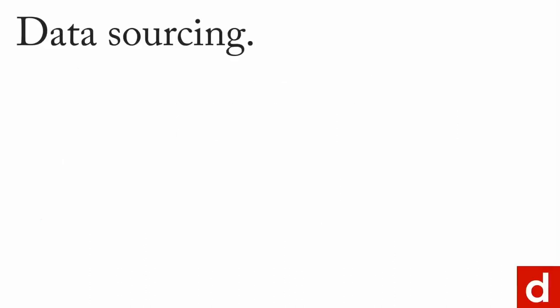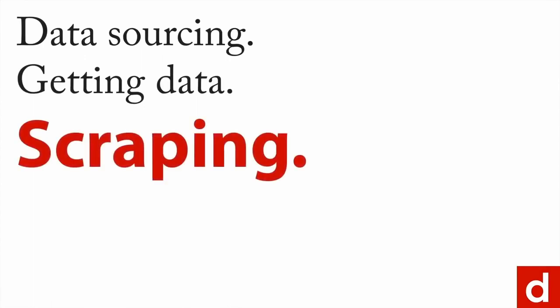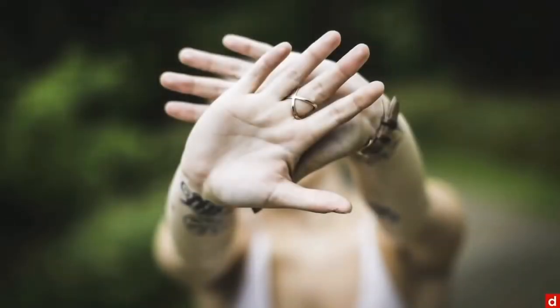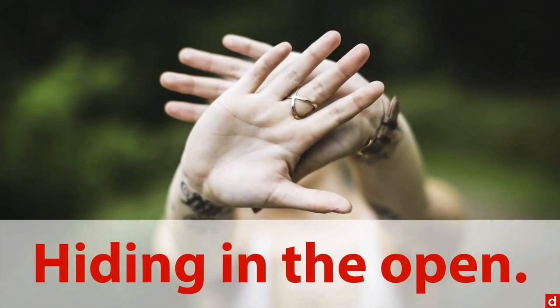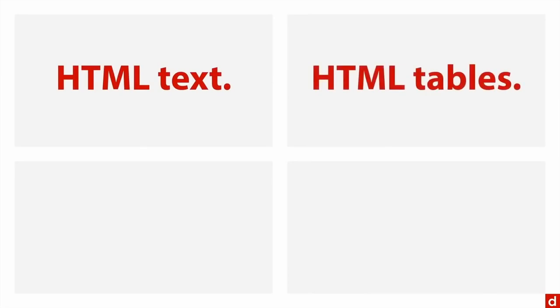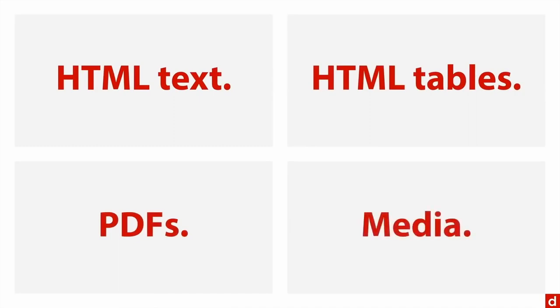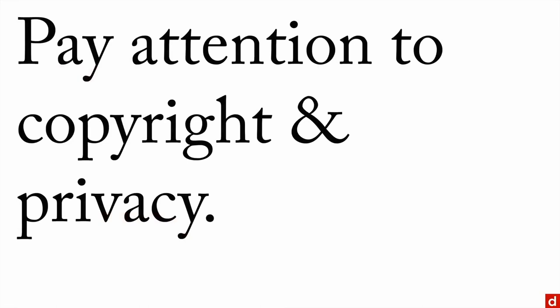Another great way of getting data is through scraping — pulling information from web pages. Think of it as when data is hiding in the open: it's there, you can see it, but there's not an easy immediate way to get it. When scraping, you can get HTML text from web pages, HTML tables, data from PDFs, and data from all sorts of media like images, video, and audio. One very important qualification: pay attention to copyright and privacy. Just because something is on the web doesn't mean you're allowed to pull it out.